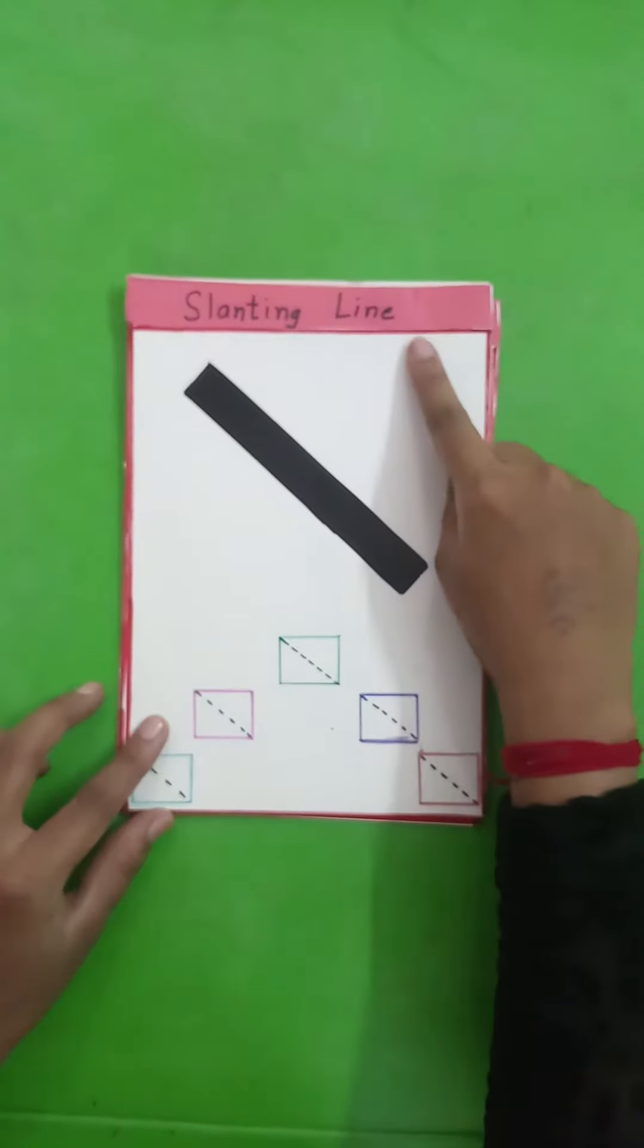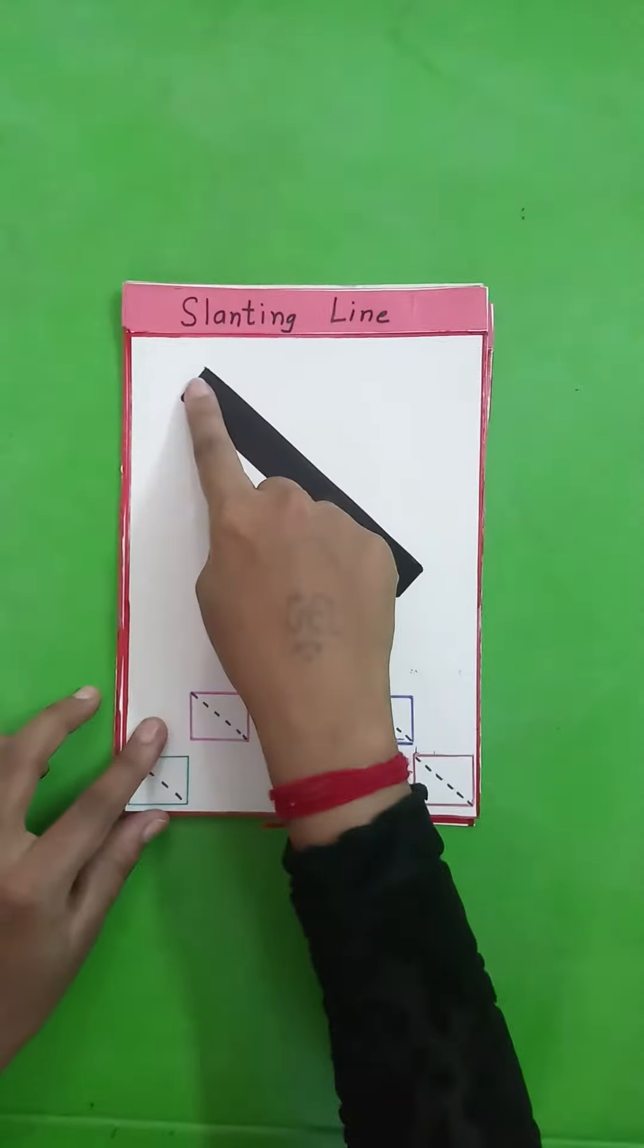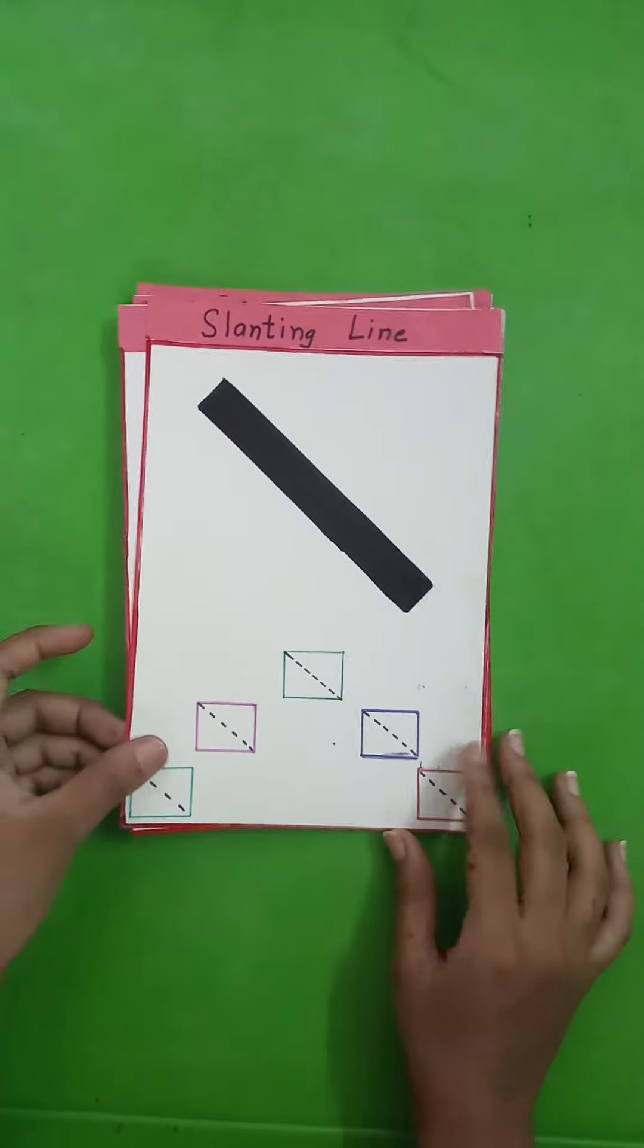Slanting line goes from the left to right, a bit slant.